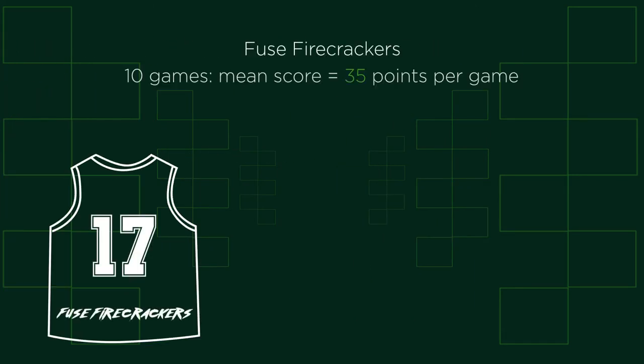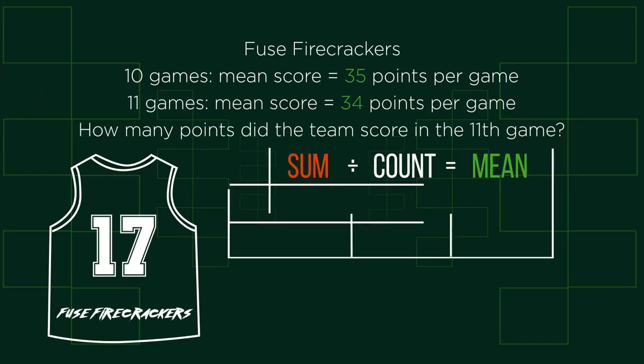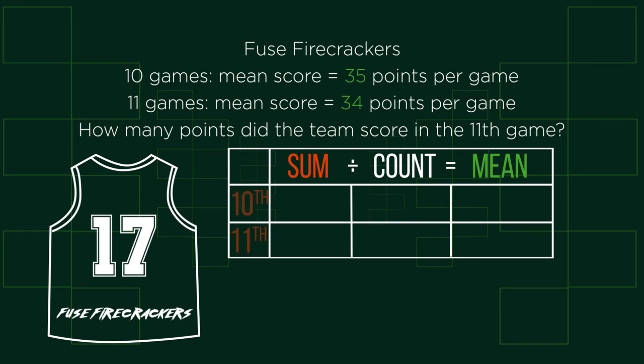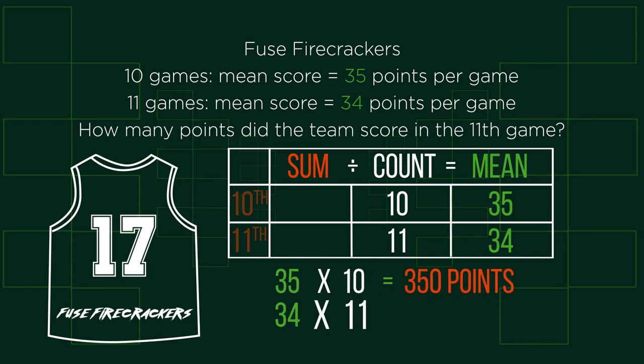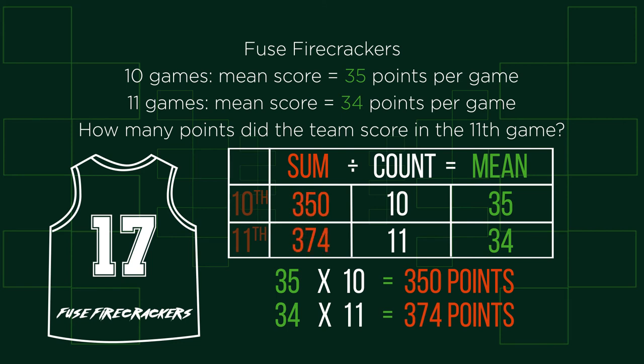Using this method, try this question. Let's see how you did. Putting the information into a table looks like this. Calculating the sum points requires us to work backwards, so we multiply the mean by the count. We can see from this that the Fuse Firecrackers scored 24 points in their eleventh game.